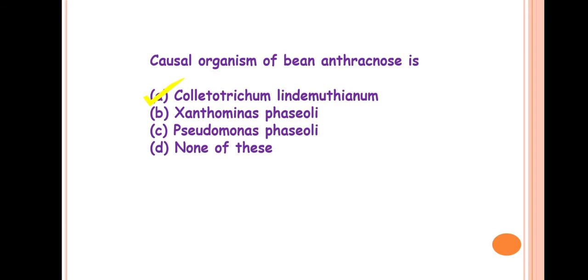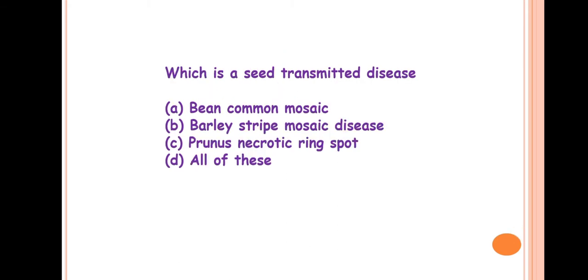Next question is: which is a seed transmitted disease? So the answer is all of these. These are bean common mosaic, then barley stripe mosaic disease, then Prunus necrotic ring spot. These are viral diseases and these are seed transmitted viral diseases.